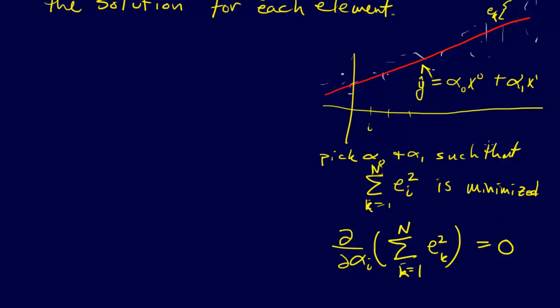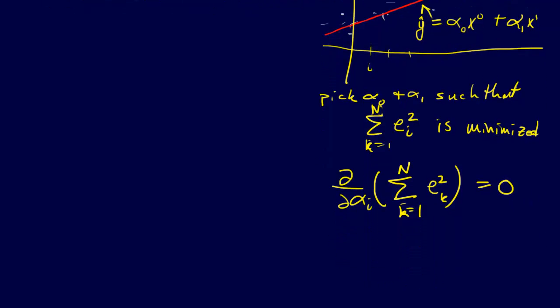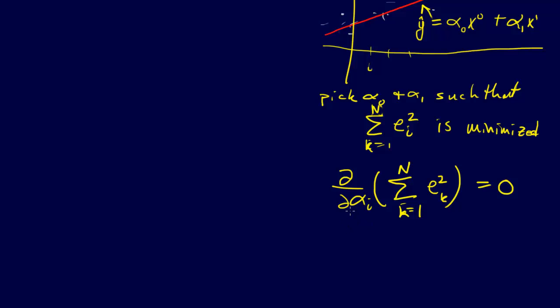We did this for each alpha i, and so there were two of them, and so what we came up with in the end was two equations. In this case we had two equations because we had alpha naught and alpha 1, only two coefficients, we had two equations. Each of these equations had a big fat sum in it. We couldn't just solve them in isolation, we had to solve them simultaneously, and those were called the normal equations.